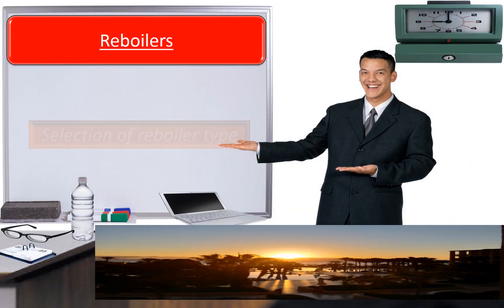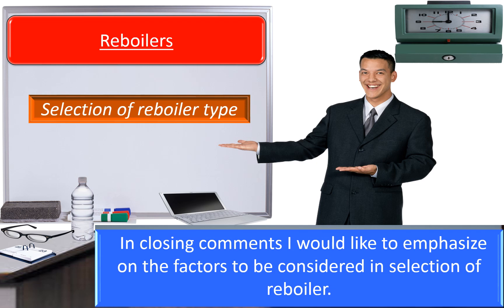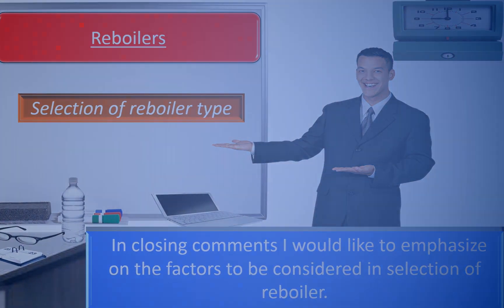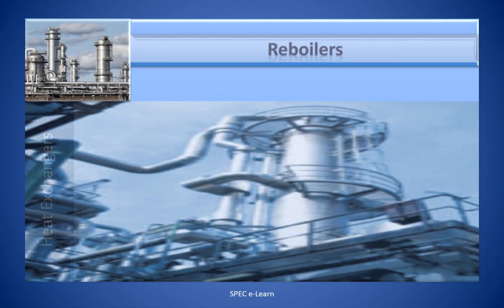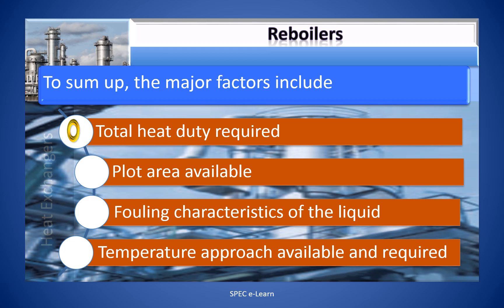Selection of Reboiler Type. In the two videos on reboilers, you have learnt the various types of reboilers. In the closing comments, I would like to emphasize the factors to be considered in the selection of a reboiler. To sum up, the major factors include: total heat duty required, plot area available, fouling characteristics of the liquid, and temperature approach available and required. All these four factors are to be considered with due importance in deciding the final choice.